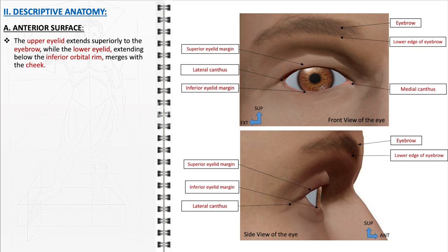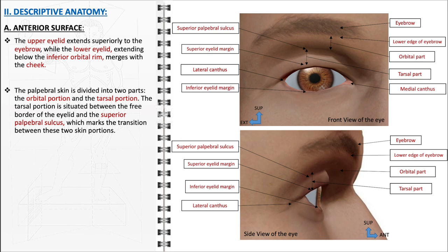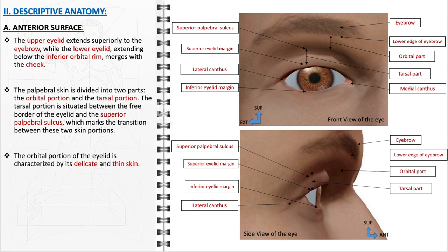The anterior surface of the eyelid exhibits several distinct features. The upper eyelid extends superiorly towards the eyebrow, whereas the lower eyelid, extending below the inferior orbital rim, merges seamlessly with the cheek. The skin of the eyelid is anatomically divided into two main parts: the orbital portion and the tarsal portion. The tarsal portion is positioned between the free border of the eyelid and the superior palpebral sulcus, which serves as a demarcating line. The orbital portion is recognizable due to its delicate, thin skin, which enhances its flexibility and sensitivity.